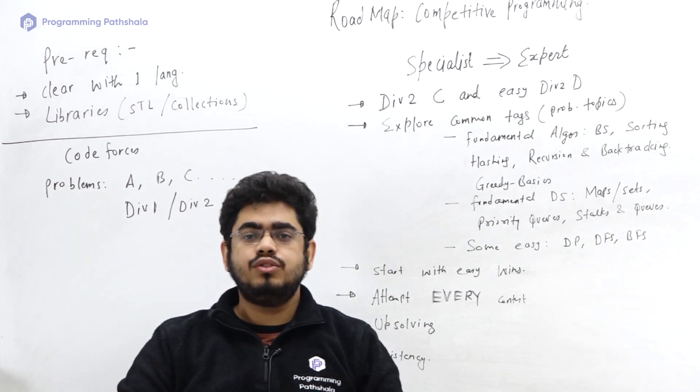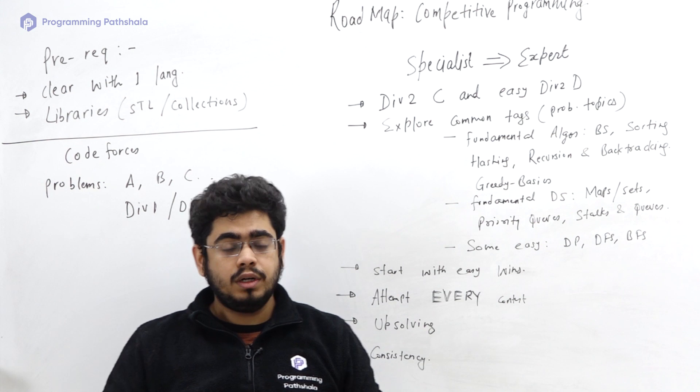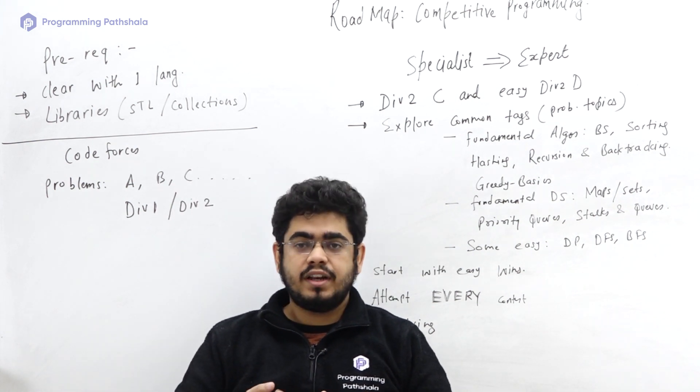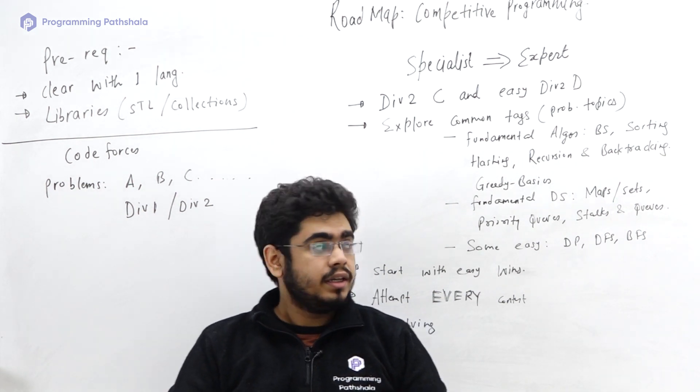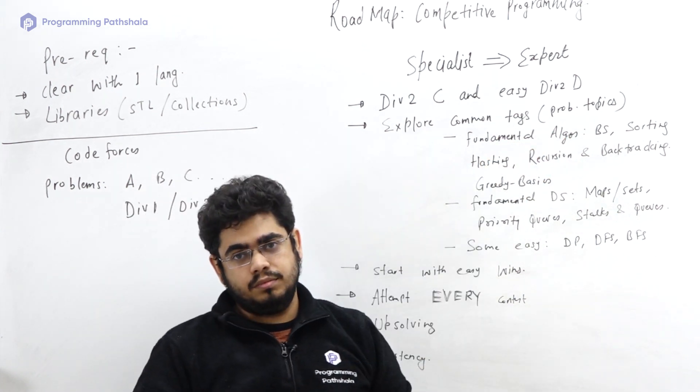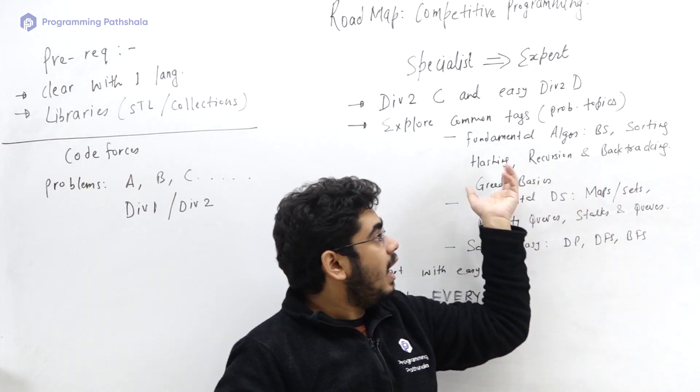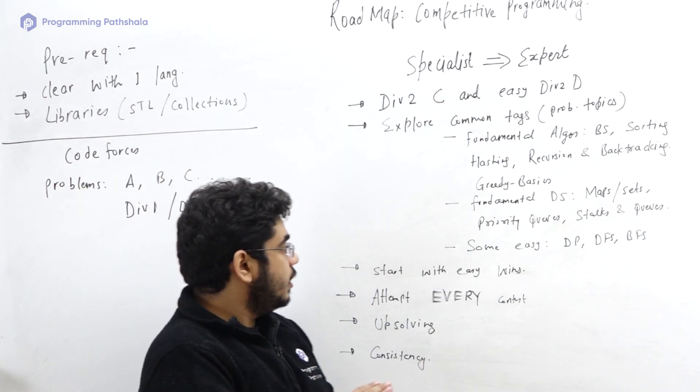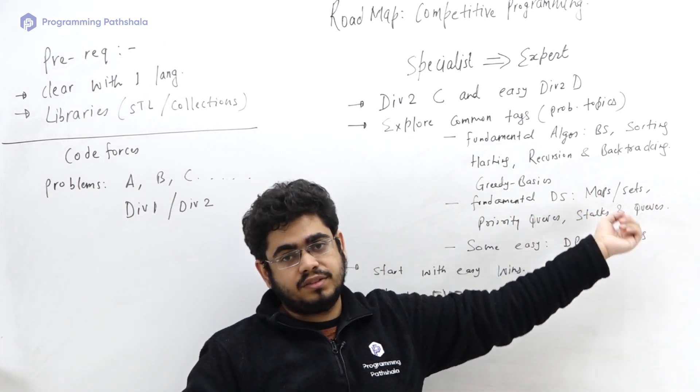Let's first analyze what kind of data structures and algorithms are actually asked in these kinds of problems. If we look at the common problem tags in Codeforces for C and D problems, particularly in recent contests, you will see that what is asked are fundamental algorithms. These include binary search, sorting, hashing, recursion, backtracking, and some basics of greedy approaches. Similarly, you need to know some fundamental data structures like maps, sets, priority queues, stacks, and queues.